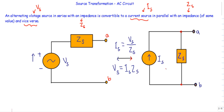So how do we convert the voltage source to a current source, or a current source to a voltage source? If I know the value of the voltage source and the impedance, the current source Is will have a value of Vs divided by Zs. I divide the voltage source value by the series impedance value to get the phasor value of the current source, and place Zs in parallel with that current source.